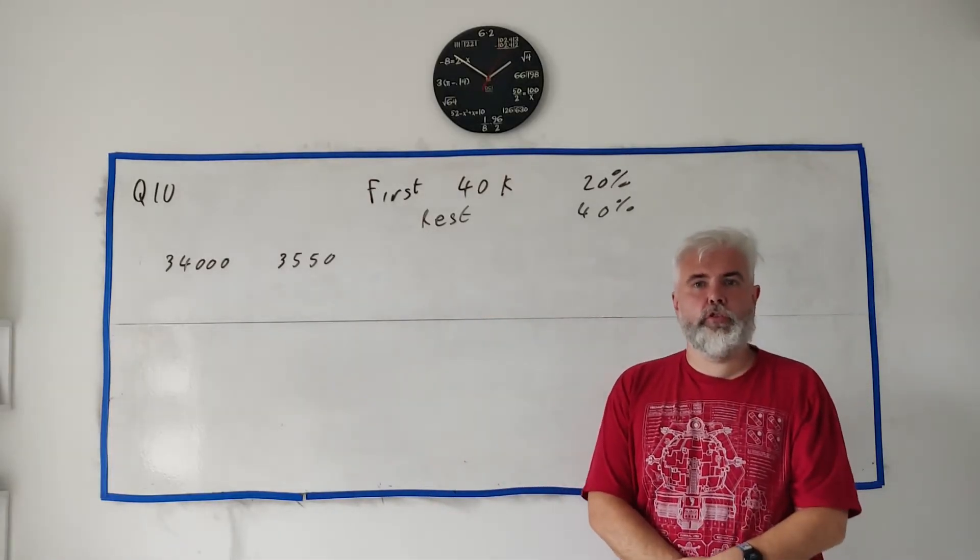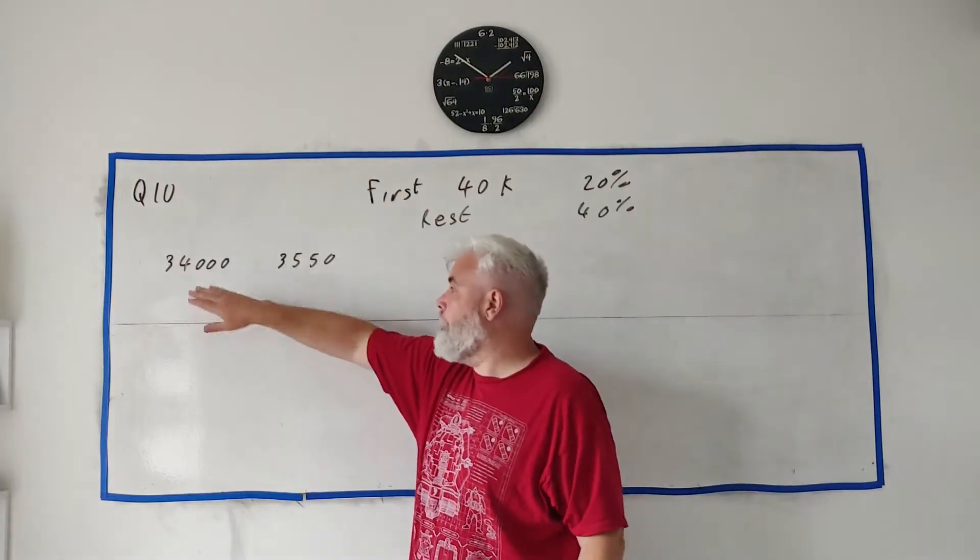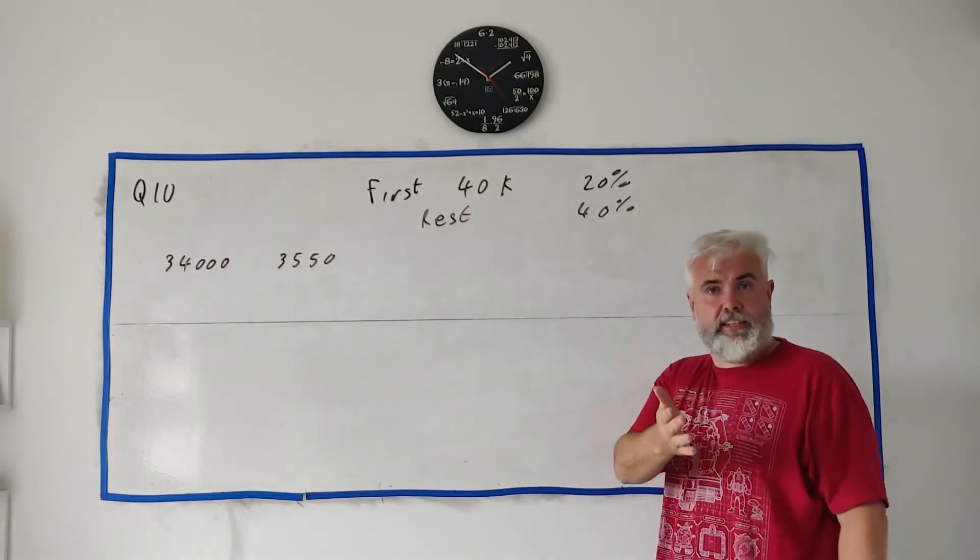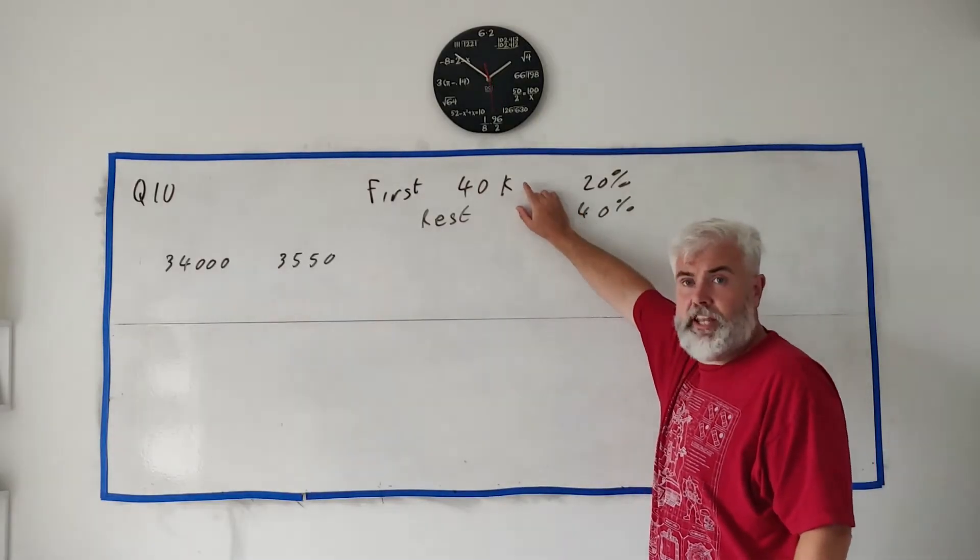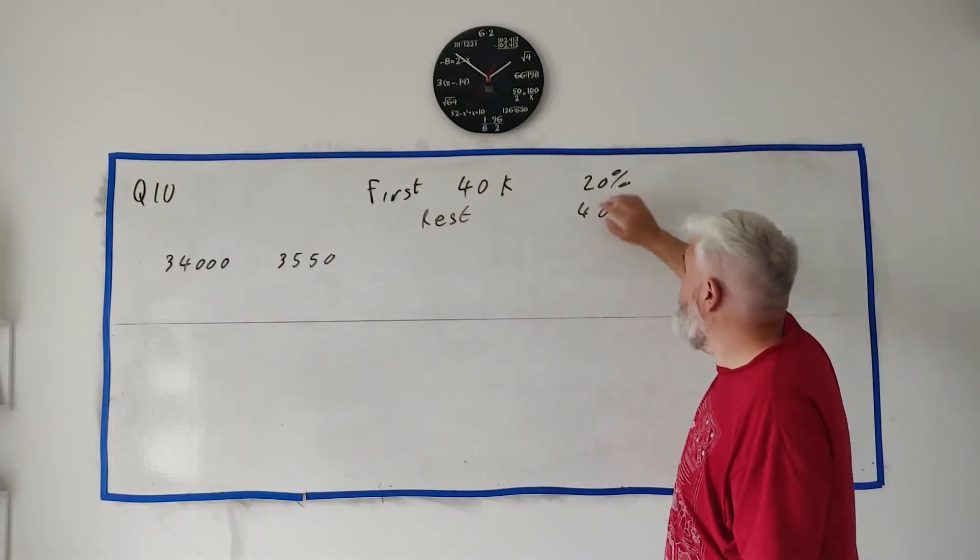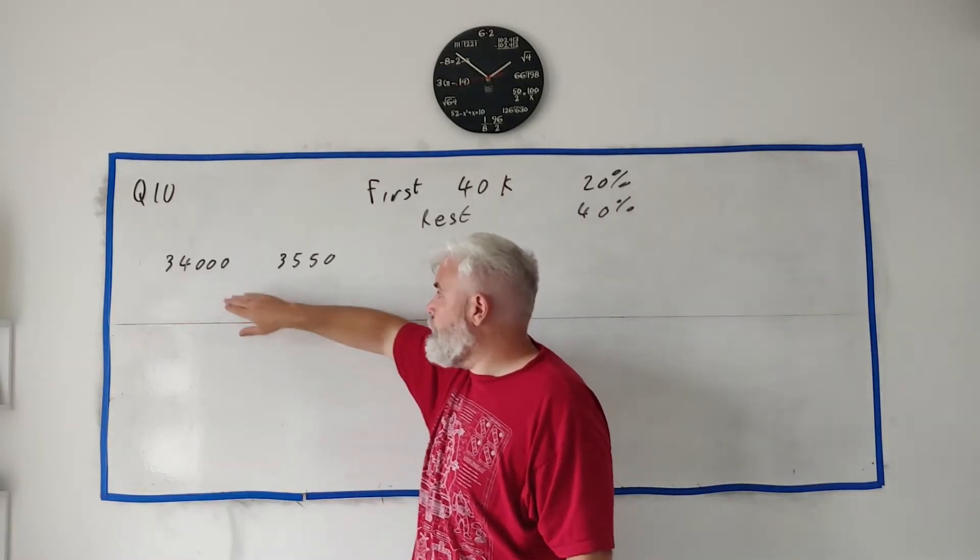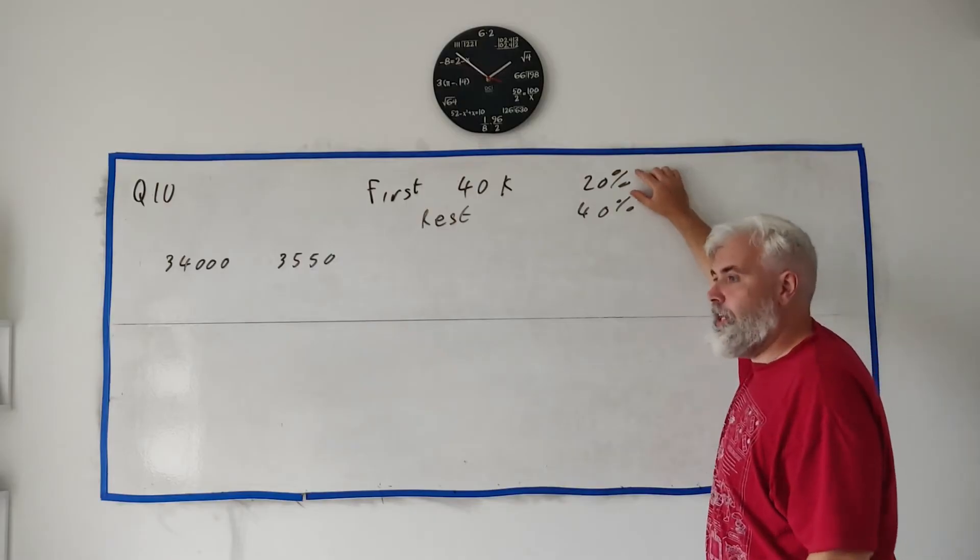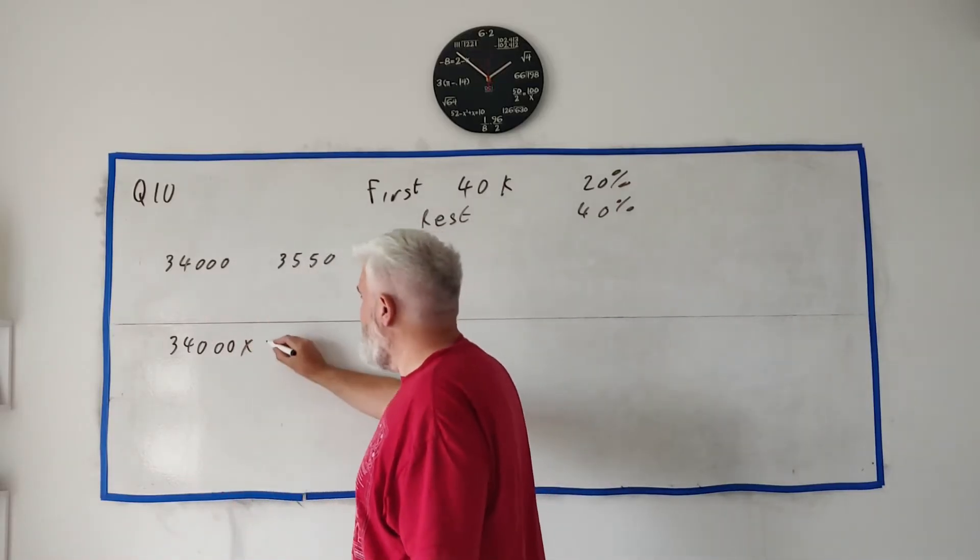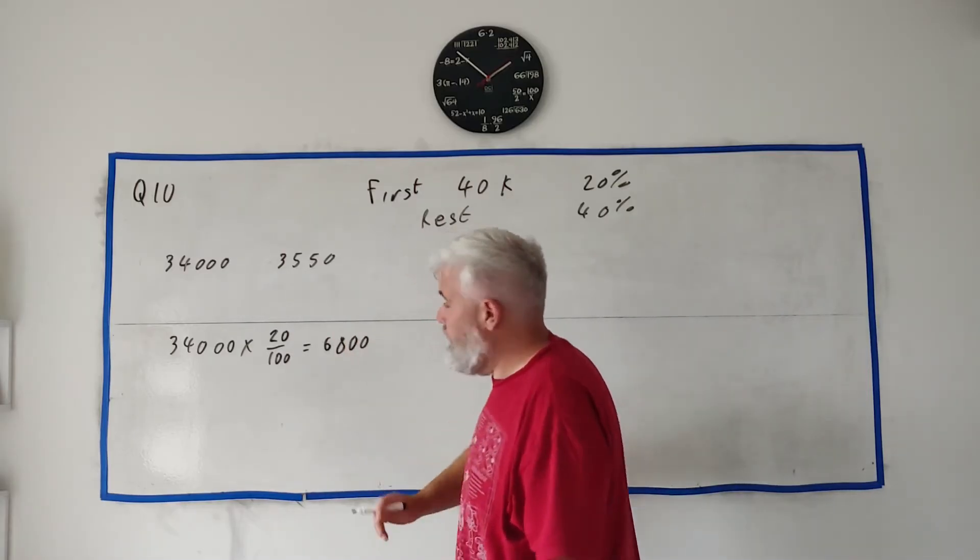For Part B, we're going to work out two people's taxes. Part one is Olivia. She has a gross annual income of €34,000 and a tax credit of €3,550. How the tax system works in 2023 - the first €40,000 they earn gets taxed at 20%, the rest or the balance gets taxed at 40%. We don't have to worry about the 40% for Olivia. She gets paid less than €40,000, so all of this €34,000 is in the 20% pile.